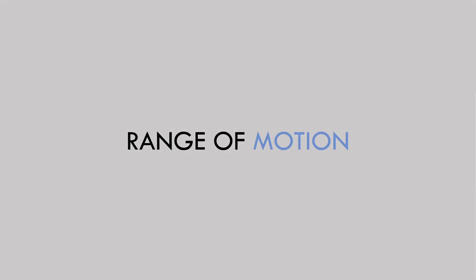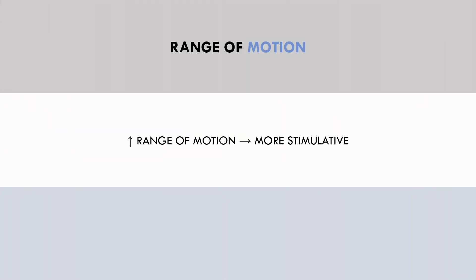The first factor is range of motion. Generally speaking, an exercise which takes a muscle through a greater range of motion is more stimulative than an exercise which takes the muscle through a partial range of motion. For example, a stiff leg deadlift trains the hamstrings through a larger range of motion than a conventional deadlift.